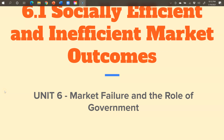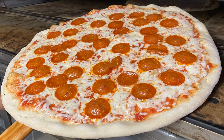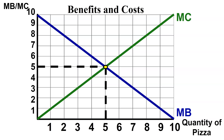Welcome to this section of Unit 6 as we look at Socially Efficient and Inefficient Market Outcomes. We're going to go back to pizza once again, looking at marginal cost and marginal benefit — we weigh the costs and benefits, referring to marginal utility and your satisfaction — and apply it to marginal social costs and marginal social benefits.